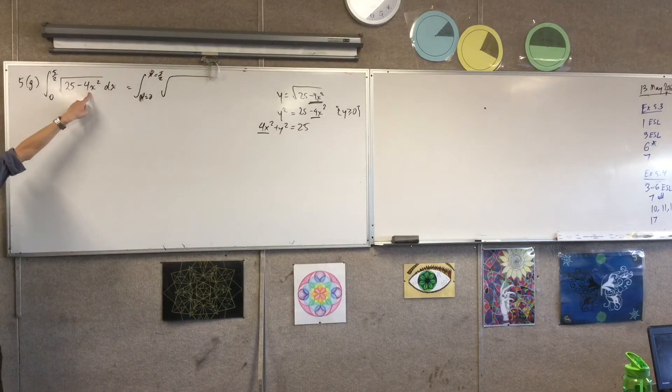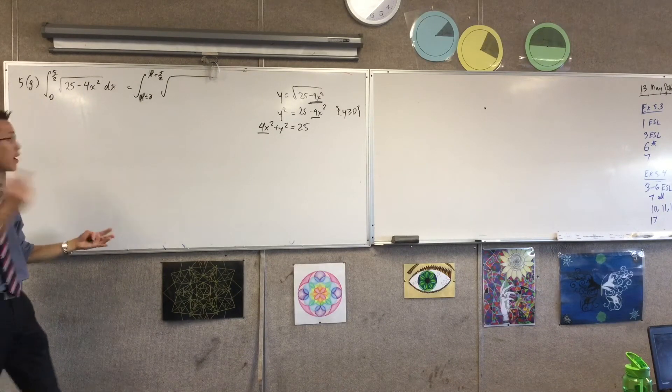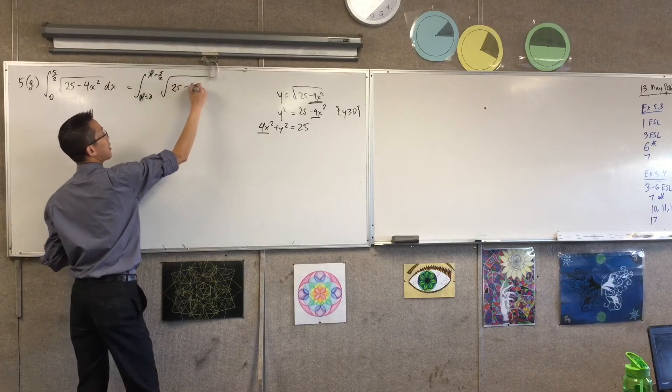And I'm going to rewrite this as 4x squared is something squared, all squared, right? What is it? 2x. 2x, right? So I'm going to write it to make that clearer.